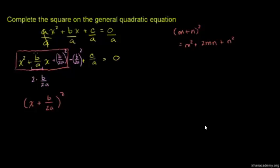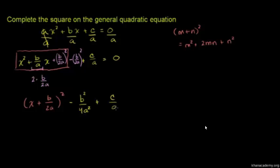And then we have all this other stuff, which is negative b over 2a squared — let me just square it for you — so b over 2a squared is negative b squared over 4a squared, and then we have plus c over a. Let's write it with the same denominator. So I could multiply the numerator and denominator by 4a: numerator gives 4ac, denominator gives 4a squared. And of course that is going to be equal to zero.